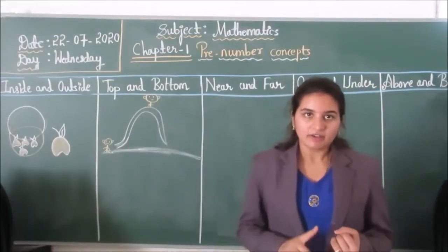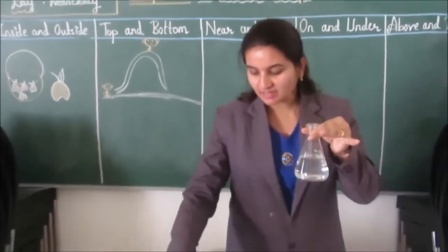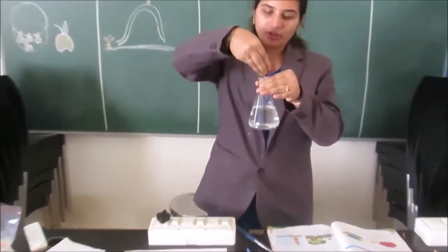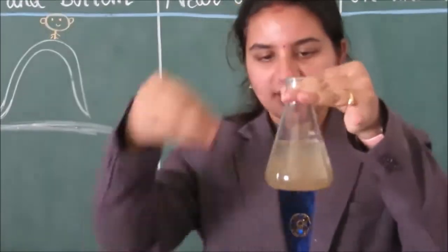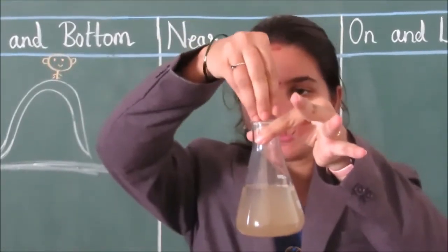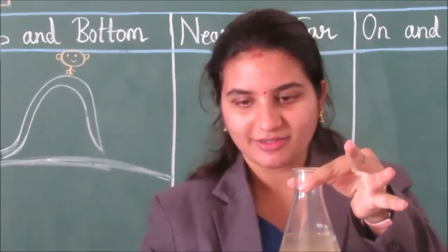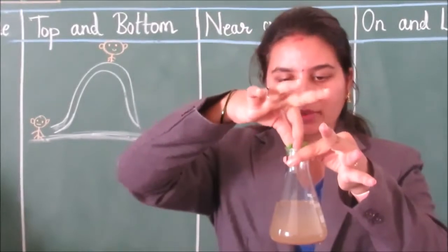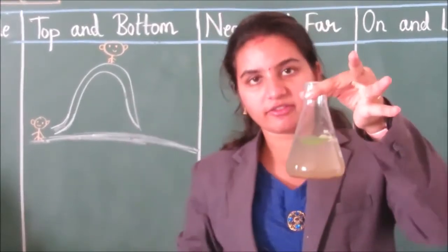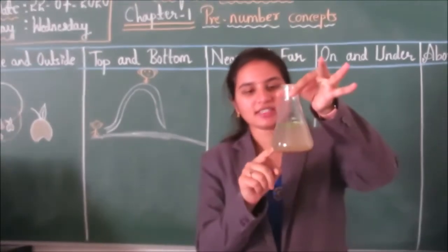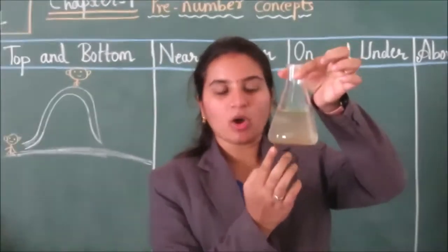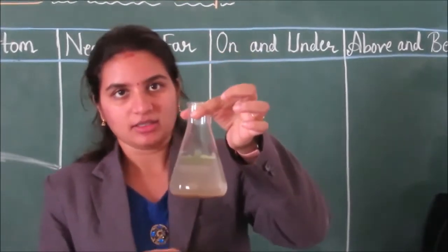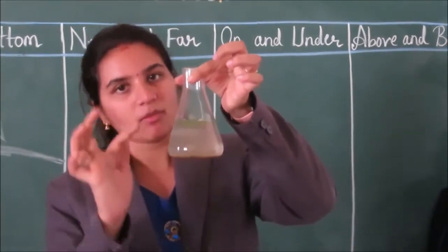Let us take another example. I have taken a conical flask with water, sand, and leaves. I am putting the sand in the conical flask. Then I am putting the leaves in the conical flask. Can you see the difference, children? The sand is at the bottom of the water and the leaves are at the top of the water. Top, bottom.